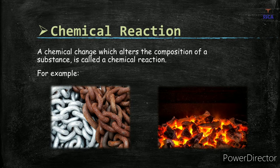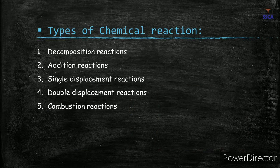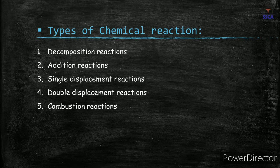So a chemical change is one in which the composition of a substance changes. We simply divide chemical reactions into five different types.